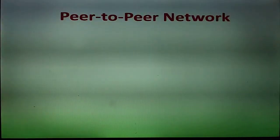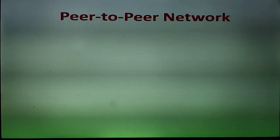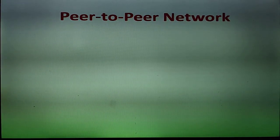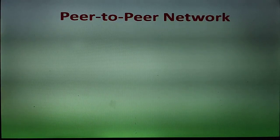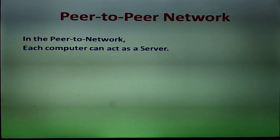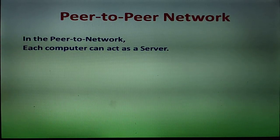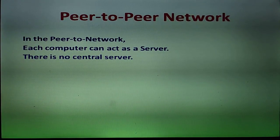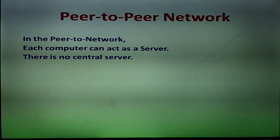The next topic is peer-to-peer network, which is also one type of network. In this network all computers have equal capacity. Simply, in a peer-to-peer network there is no server — each computer can act as a server. Suppose there are ten computers; all act as a server. There is no central server, meaning computers work without a dedicated server in this network.